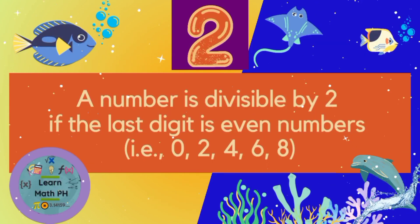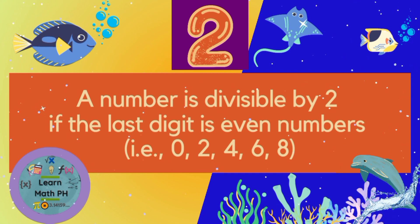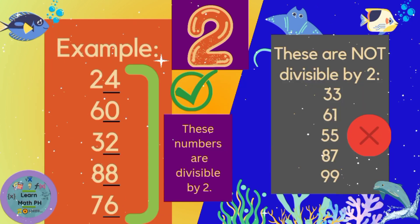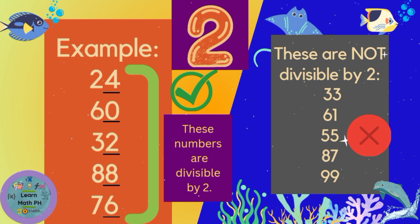Divisibility rules. A number is divisible by 2 if the last digit ends with an even number, such as 0, 2, 4, 6, or 8. Kapag nagtatapos sa 0, 2, 4, 6, or 8, ang number na yun ay divisible by 2. Halimbawa: 24 ends in 4, 60 ends in 0, 32 ends in 2, 88 ends in 8, and 76 — all divisible by 2. Pero yung 33, 61, 55, 87, 99 — hindi sila divisible by 2 kasi odd numbers sila. Lahat ng even numbers ay divisible by 2.